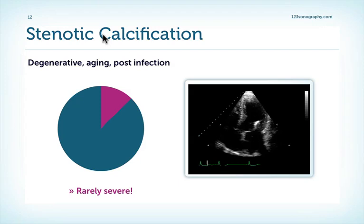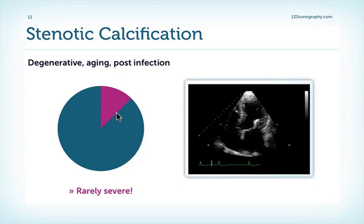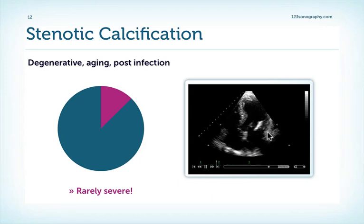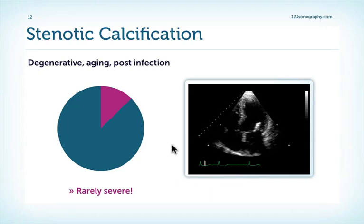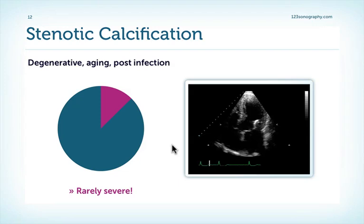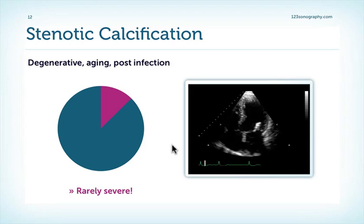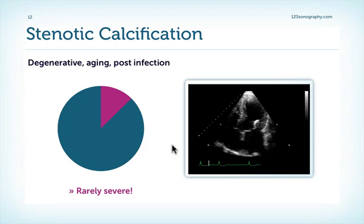The second most frequent cause of mitral stenosis is stenotic calcification, which is significantly less common than rheumatic heart disease. Here's an example where calcification spreads from the annulus to the mitral valve leaflet — the posterior leaflet — causing a reduction in mitral valve orifice area and thereby mitral stenosis. Very rarely will we see significant mitral stenosis in the setting of stenotic calcification. However, in end-stage disease, it is often very difficult to say if the primary cause was stenotic calcification or rheumatic heart disease.